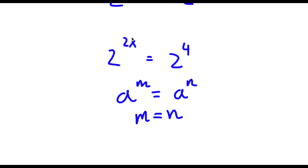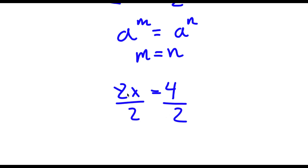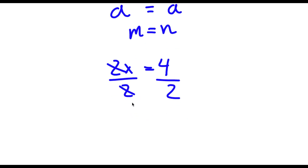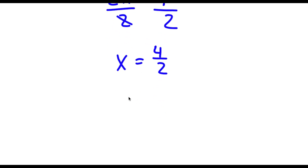So in this case, 2x is equal to 4. Now I have a simple equation. All I have to do to solve it is divide both sides by 2. So these two cancel out and I'm left with x is equal to 4 over 2. Well 4 divided by 2 is simply equal to 2, so x is equal to 2.